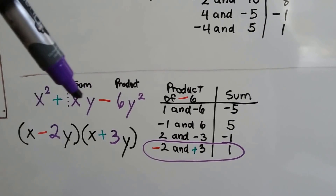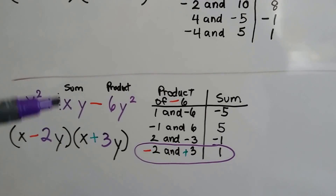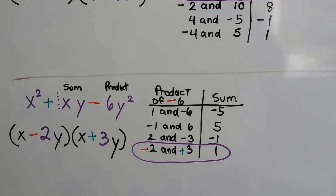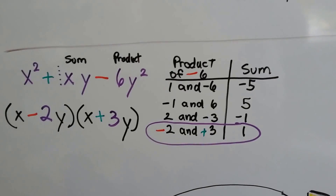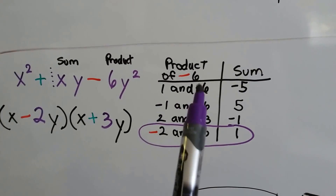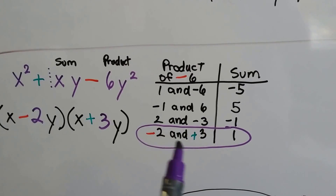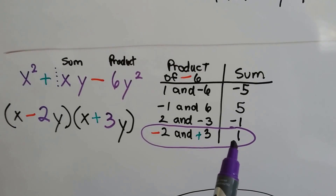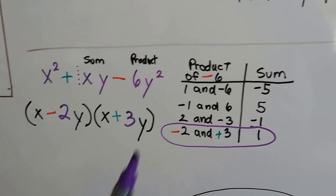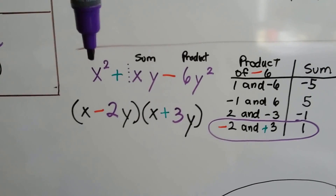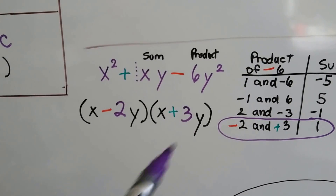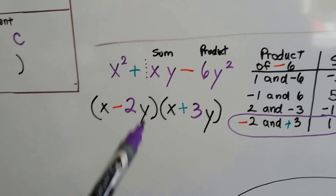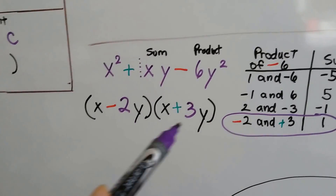Here we don't have a coefficient written — we need a sum of x·y. Remember our friend the invisible 1 — the identity property? There's really a 1 in front of that x. So we need a product of negative 6 and a sum of positive 1. What can we multiply to make negative 6? 1 and negative 6, negative 1 and 6. When we get to negative 2 and positive 3 — multiplying makes negative 6, and adding them together equals positive 1. It works! So we have minus 2 plus 3. And remember, when we write our binomial parentheses, we automatically put an x in the front of each one because of x squared, and then look up the coefficients using the factoring table.